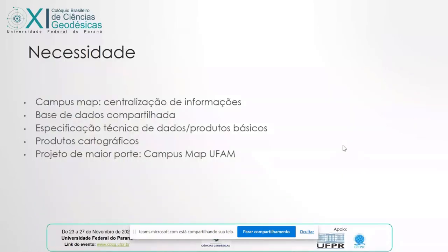Our need within this Campus Map project is to centralize data and information, and to create a shared database among all university users and all sectors — especially researchers who have made various developments within the university over the last 30 years. We propose a technique of basic data and products, including derivations of topographic products and what we call requisitions. This is our project — Campus Map — and we are currently trying to finance it.